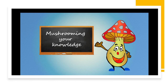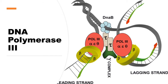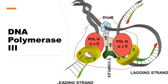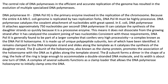Hello guys, welcome to our channel Mushrooming Your Knowledge. Today we discuss the structure and function of DNA Polymerase 3. In my previous video I discussed the structure and function of DNA Polymerase 1 and 2 — links are in the description box. There are five types of DNA polymerase: 1, 2, 3, 4, and 5, and each has a separate role in DNA replication. Today we focus on DNA Polymerase 3.